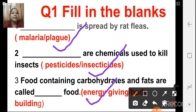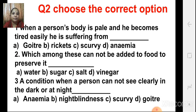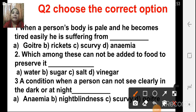Now let us see the next set of questions — choose the correct option. The first one: when a person's body is pale and he becomes tired easily, he is suffering from what? The options are goiter, rickets, scurvy, and anemia. The correct answer is D, anemia. Anemia is caused by the deficiency of the mineral iron. When iron is deficient, the body becomes pale and the person becomes tired easily.